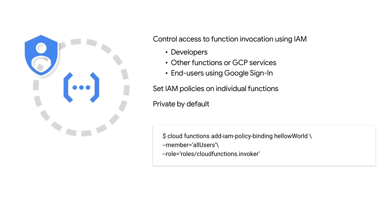And finally, new IAM controls grant the ability to specify which users have access to run and interface with what Cloud Functions, meaning you can create microservices which, instead of being available to the outside world by default, can be limited to only interact with other systems inside your application.